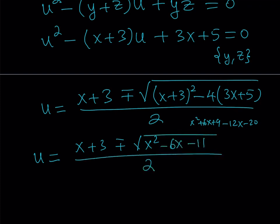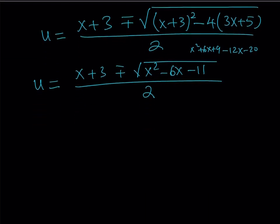That expression is our discriminant. Notice that u is either y or z because of the plus or minus sign. We also know that y, z, and x are all integers. Therefore, the discriminant — x squared minus 6x minus 11 — must be a perfect square. Otherwise we'd get an irrational solution, which is not an integer.